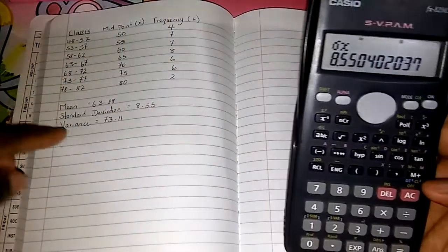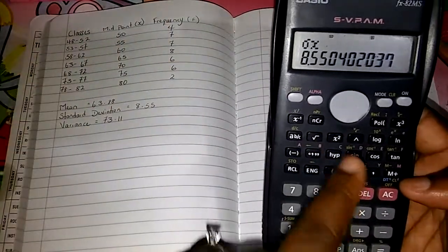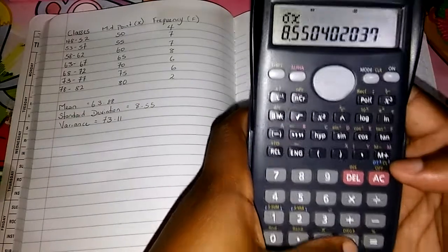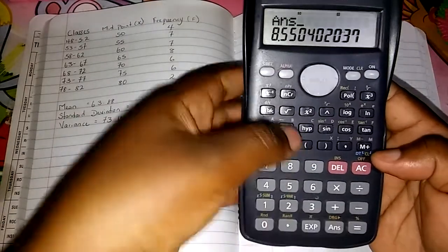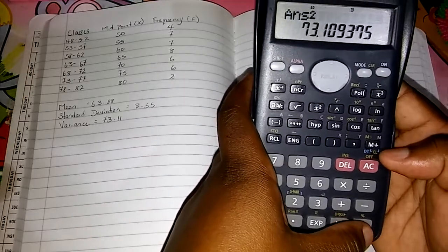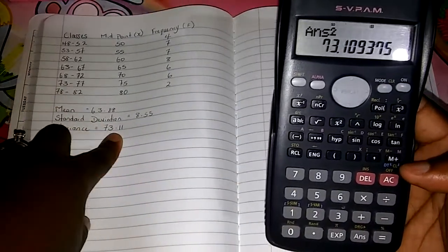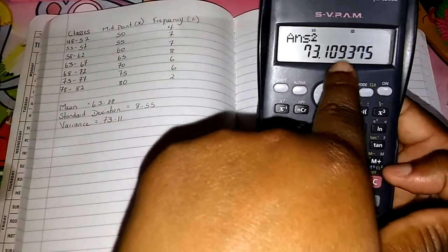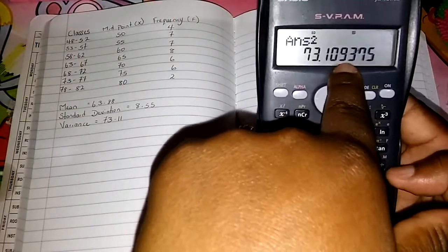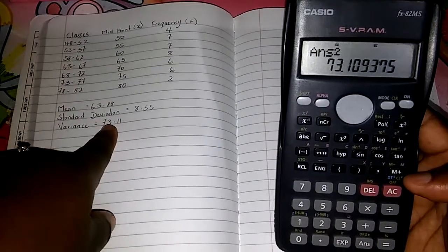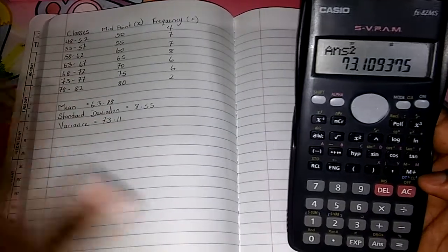Then to find the variance, we're going to square this and the answer will be the variance. So answer squared is equal to 73.109375. We don't need all of that. We're going to round off. After the 0, you have a 9, so it's more than 5. We add 1, and we get 73.11. So that's the variance.